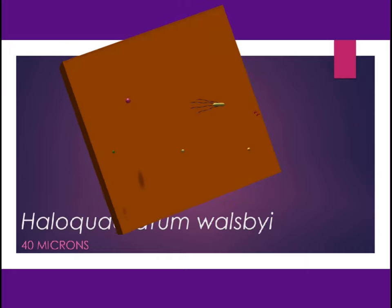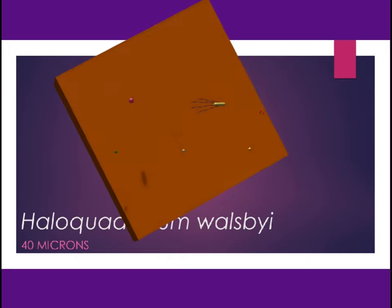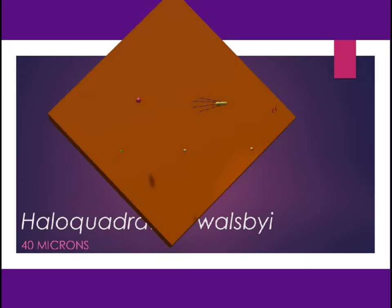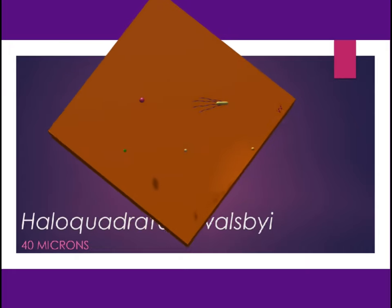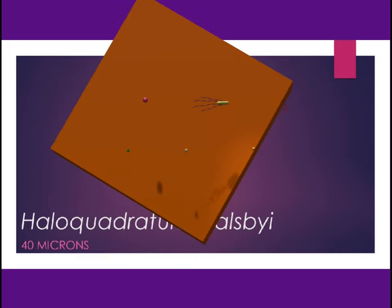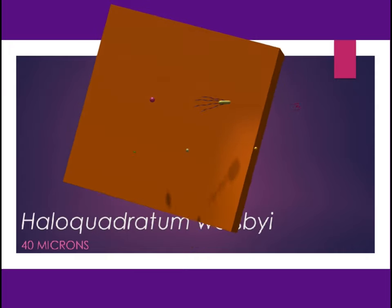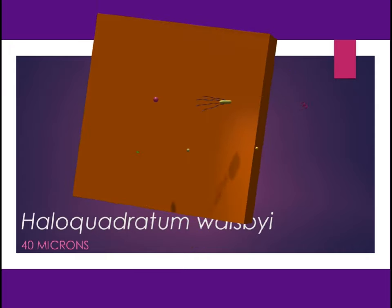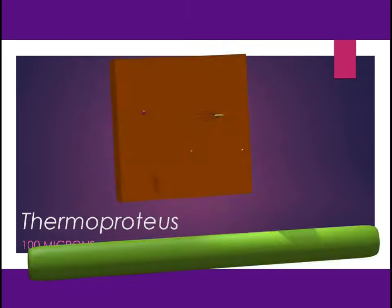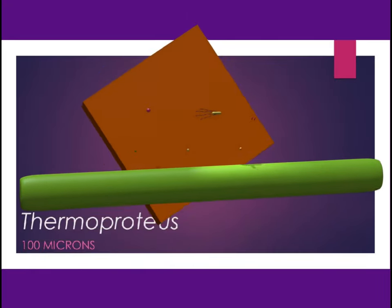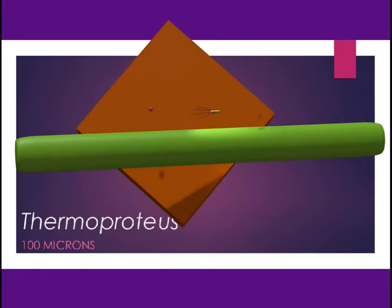Some bacteria can be larger. Haloquadratum has an odd square shape and can measure 40 microns. Thermoproteus is a long rod,